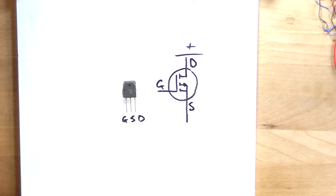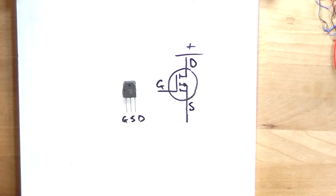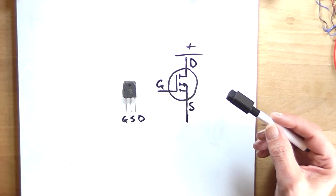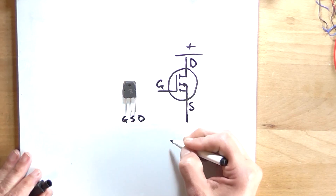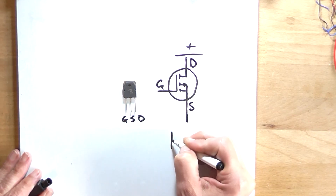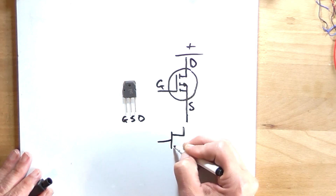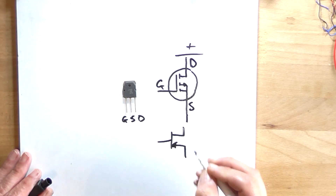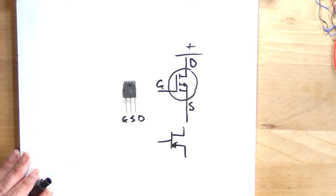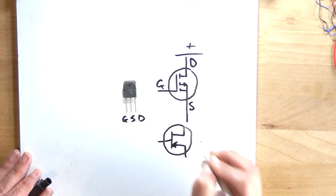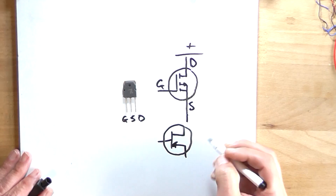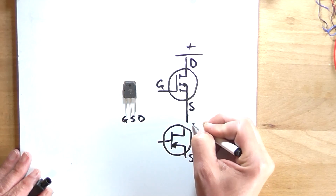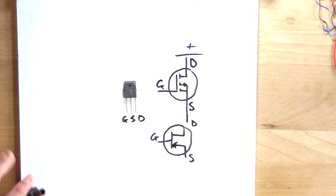Now there are various different ways of drawing a representation of a MOSFET. I have actually seen them drawn like this before with a circle around the symbol. But still, the source pin is the one with the arrow on it — so that's source, drain and gate respectively.